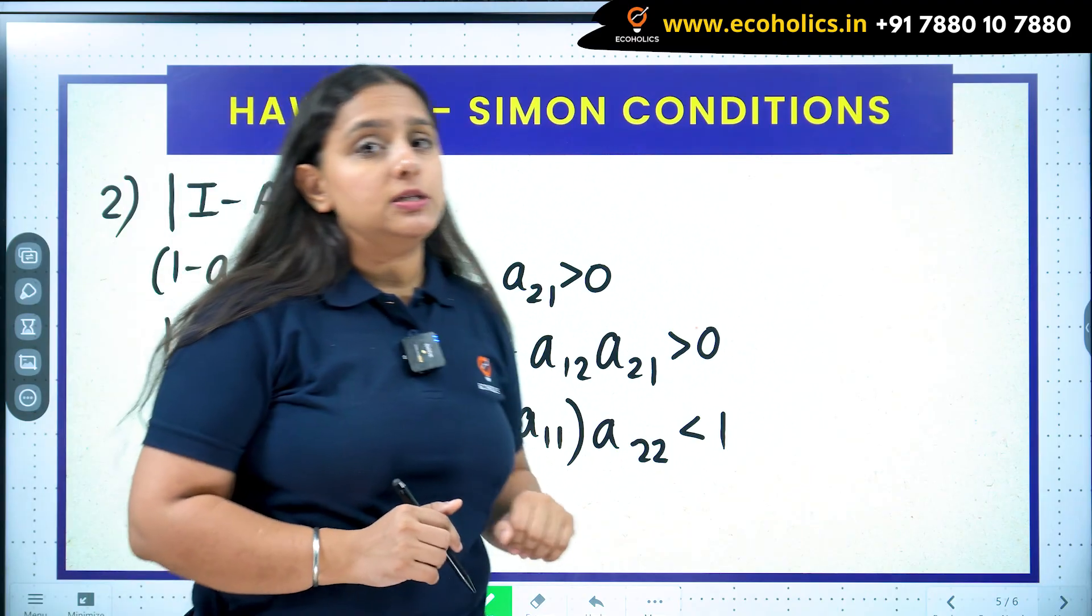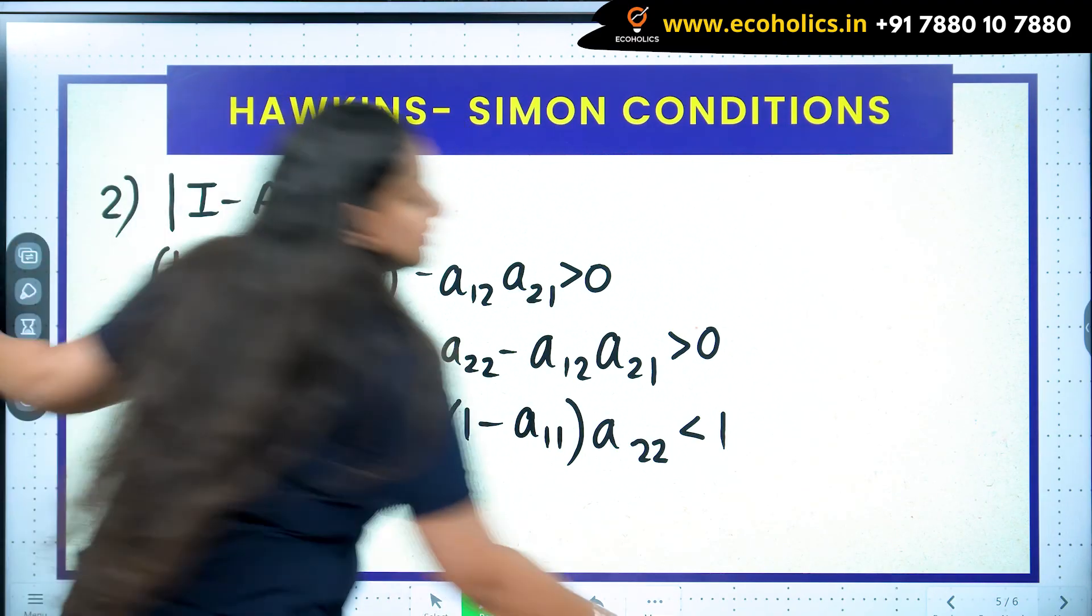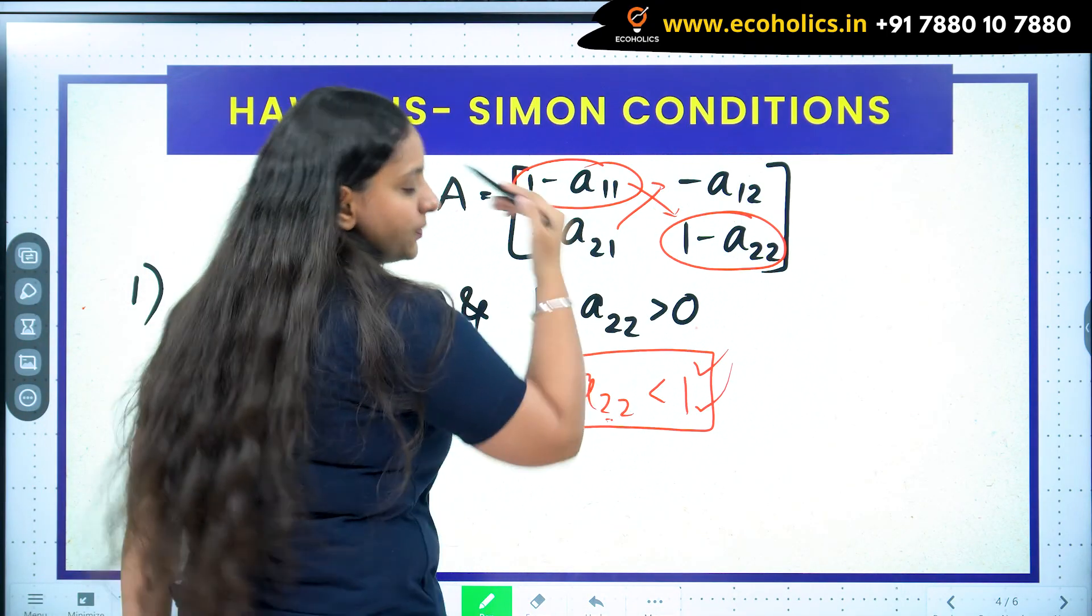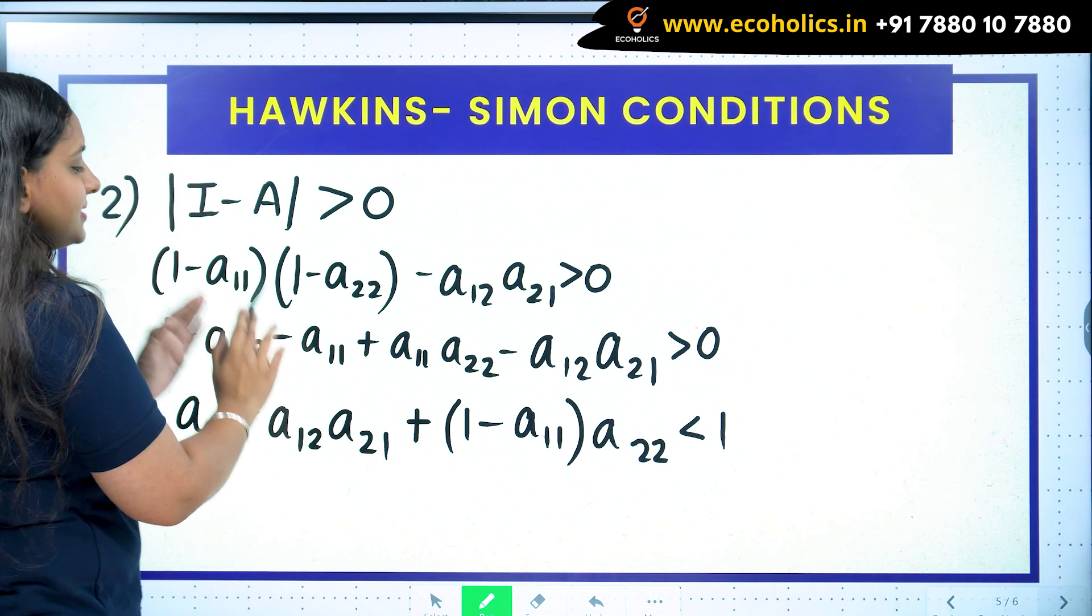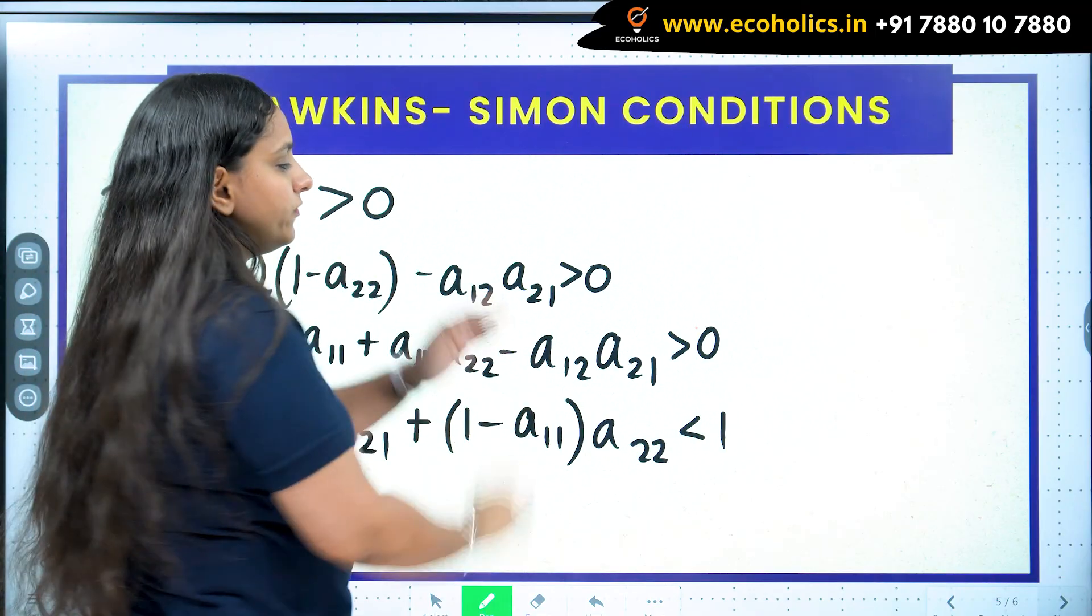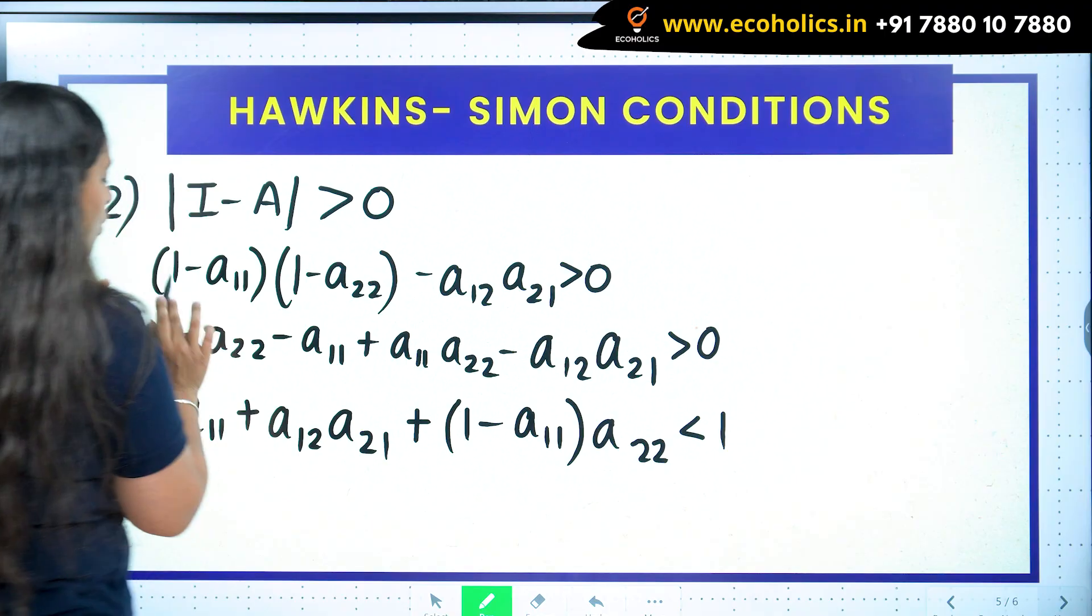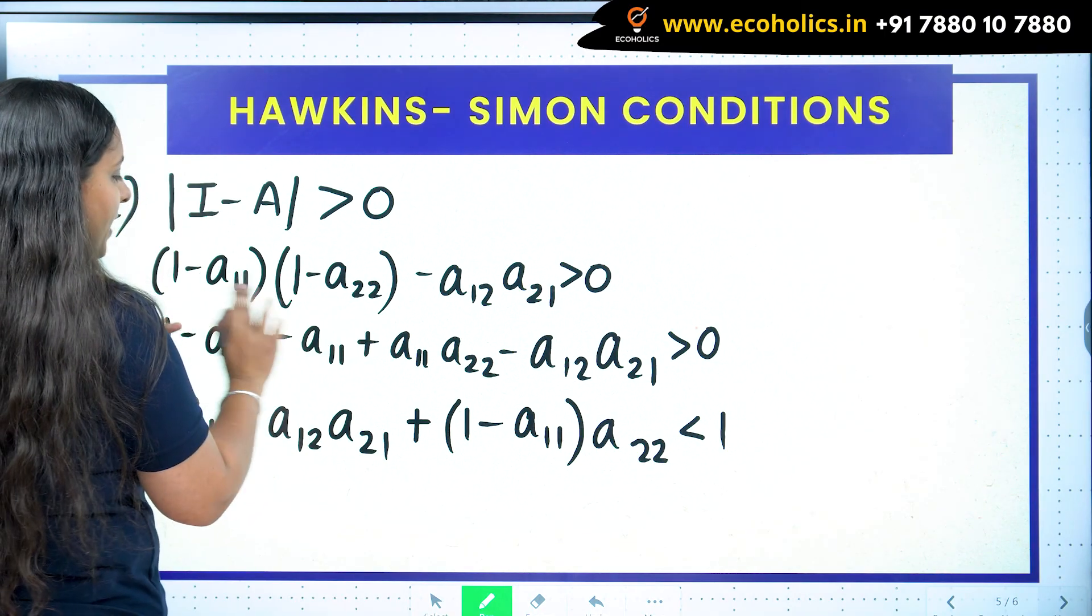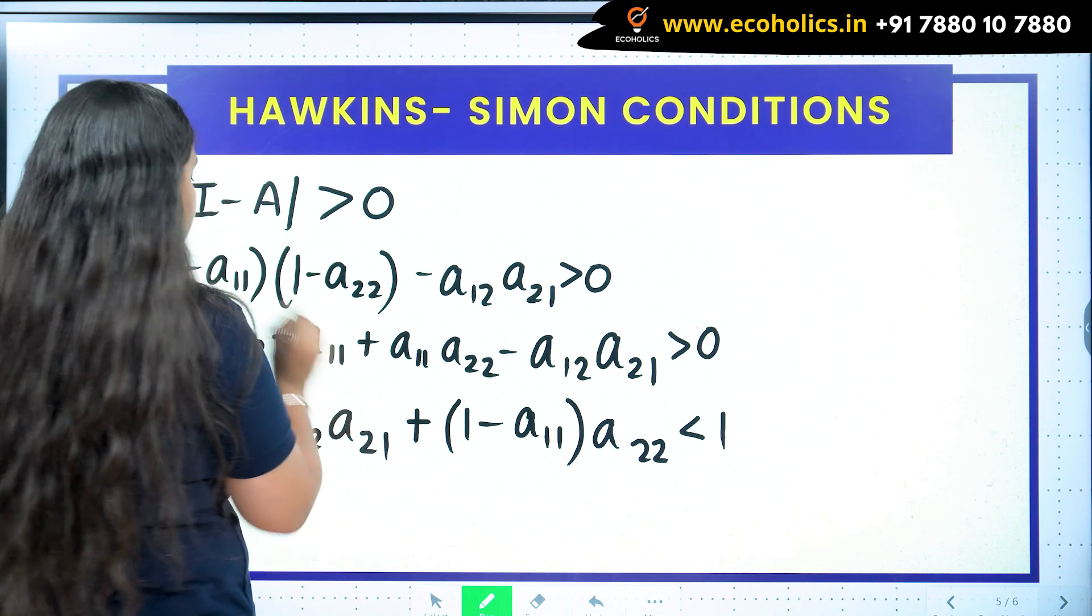The second Hawkins-Simon condition is that the determinant of I minus A should be strictly positive. But why? We are going to understand that reason. What is the determinant? How do we find determinant of 2 by 2? Cross multiply them and subtract. So the same I have done: (1-a_11)(1-a_22) minus the off-diagonal. I want them to be positive, so I am just multiplying them. 1 into 1 is 1, 1 into minus a_22 is this, minus a_11 into 1, and then minus and minus will be plus a_11*a_22.